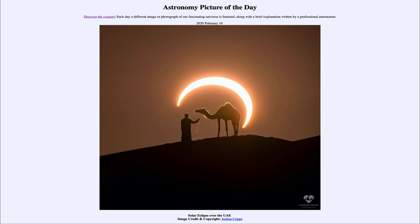We were able to get a very nice picture as that eclipsed sun was rising over the horizon, timed perfectly to get the camel right in position between the limbs of the eclipsed sun. That was our picture of the day for February the 10th of 2020, titled 'Solar Eclipse over the UAE.' We'll be back again tomorrow for the next picture, previewed to be 'Sky Divide,' so we'll see what that's about. Until then, have a great day everyone and I will see you in class.